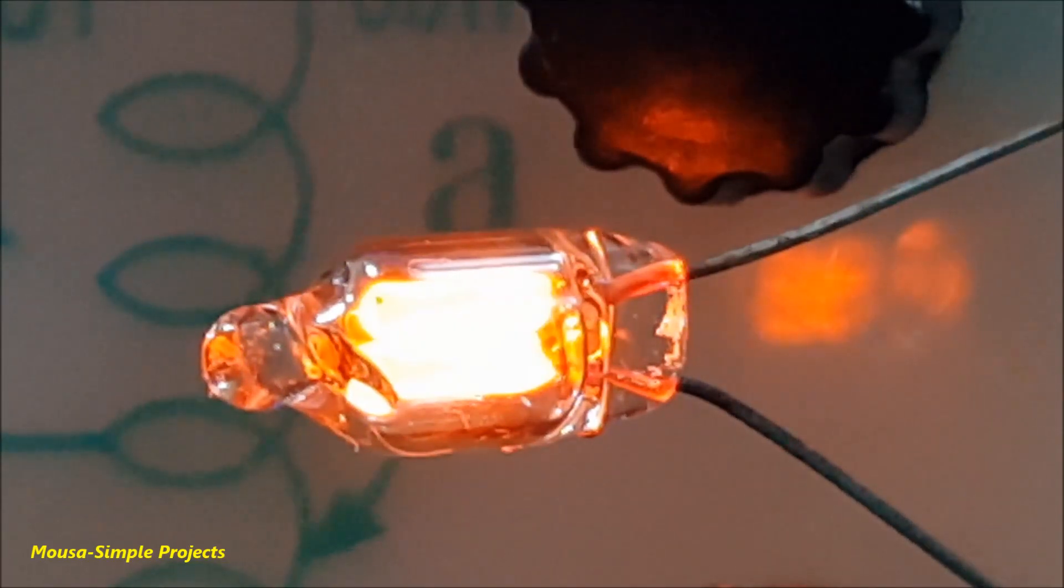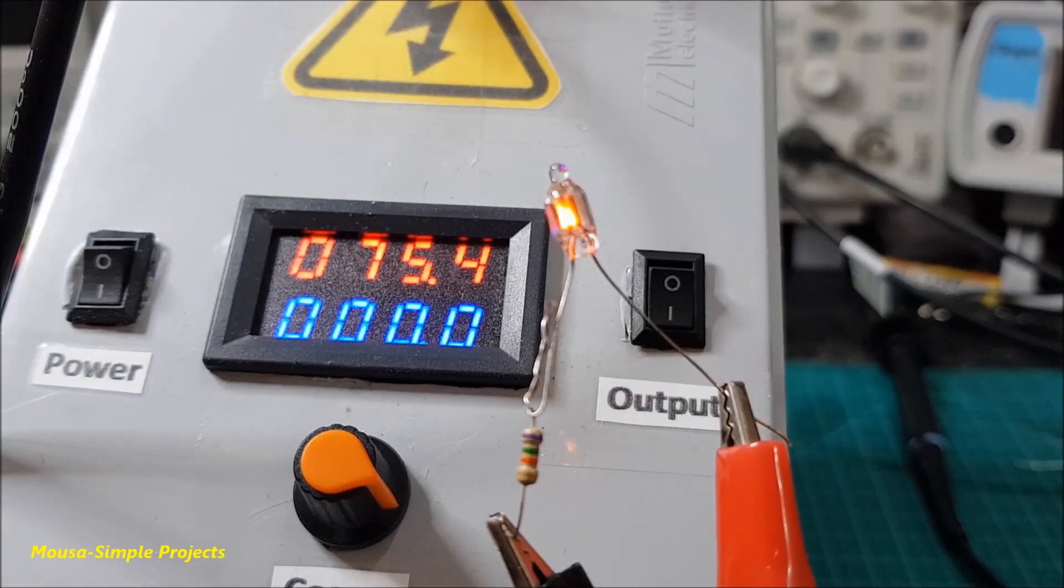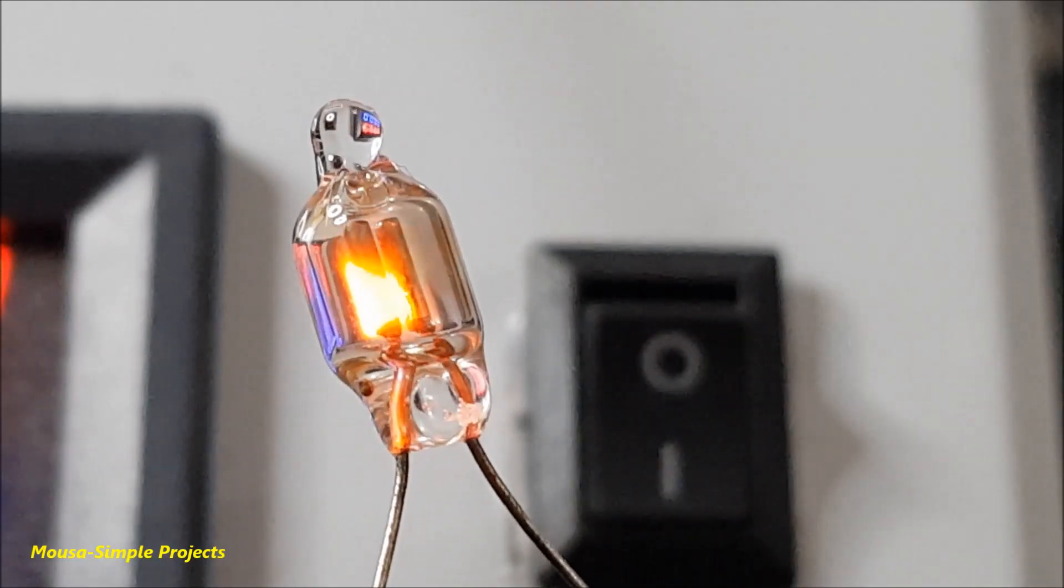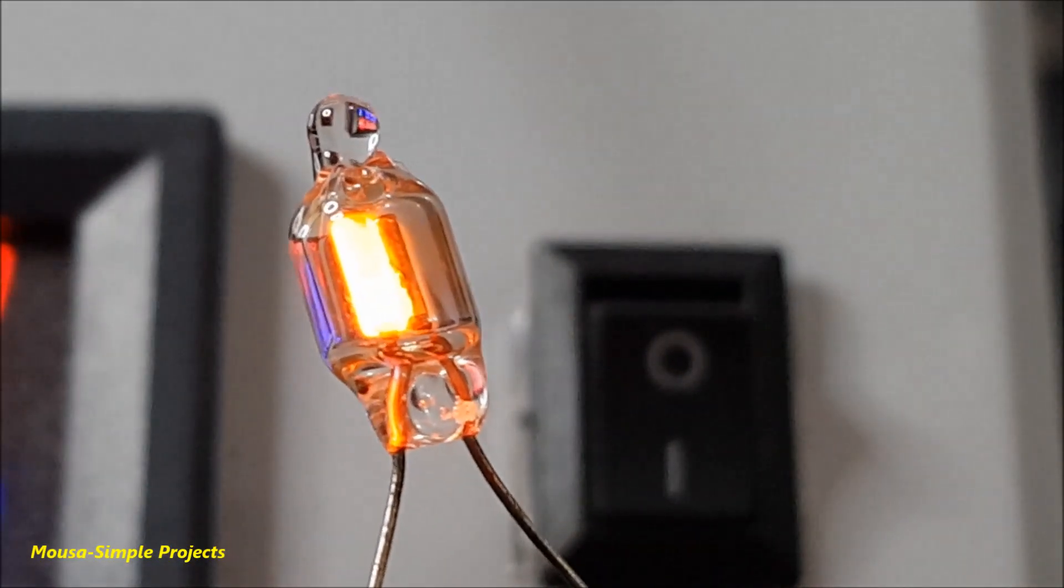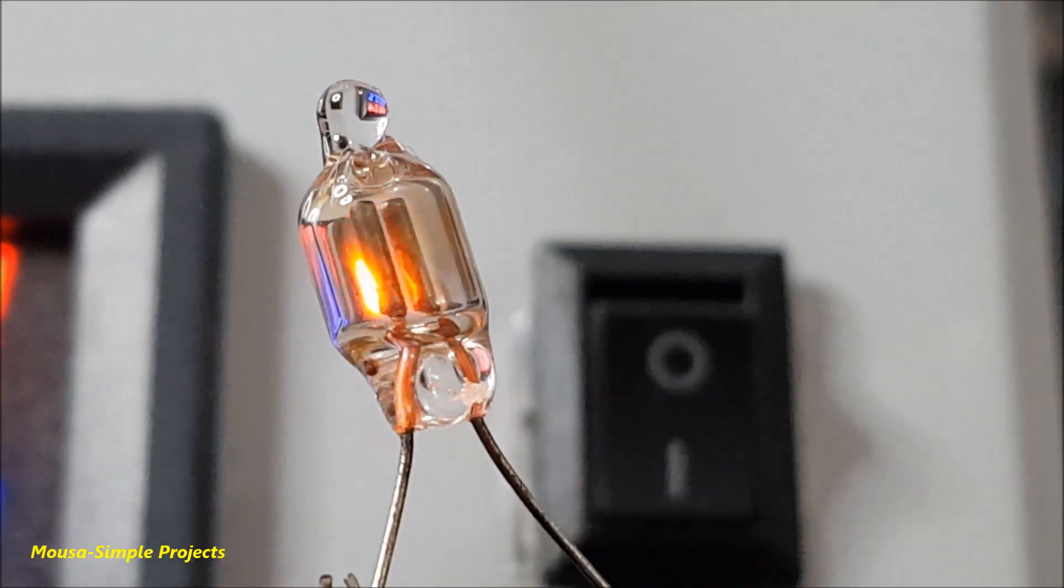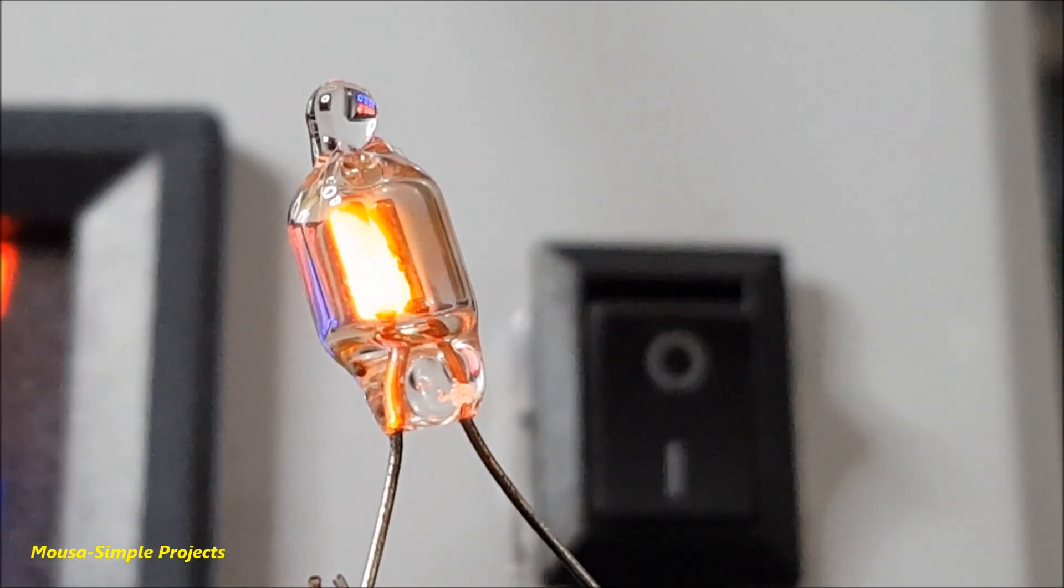The neon lamp can run with both AC and DC voltage. But if you run it with DC voltage, only one of two electrodes glows.